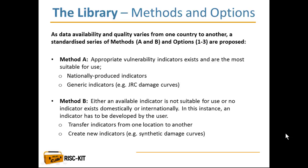Different methods are proposed in the library, as data availability and quality varies from one country to another. Method A uses appropriate vulnerability indicators that already exist in a specific country or region — usually nationally produced or generic indicators. If these indicators are not suitable or not available, you will have to produce your own indicators. There are two options: transferring an indicator from one location to another, or creating new indicators.